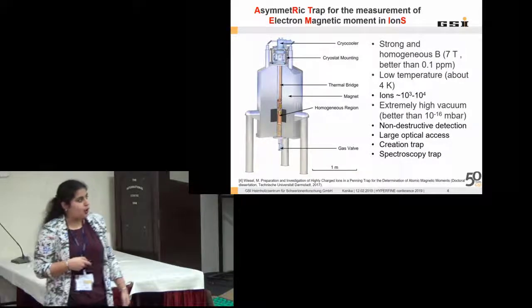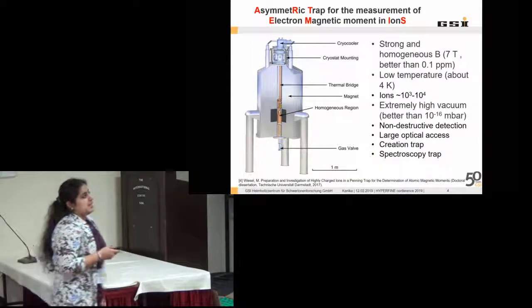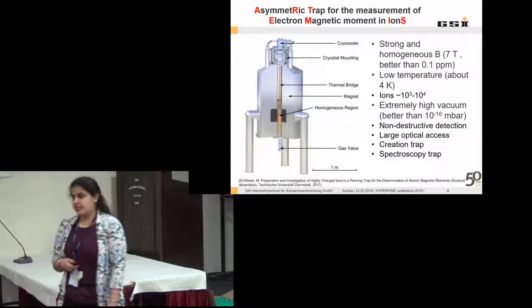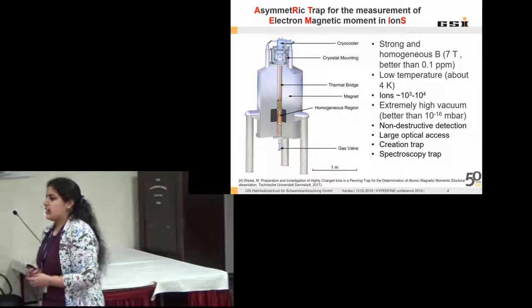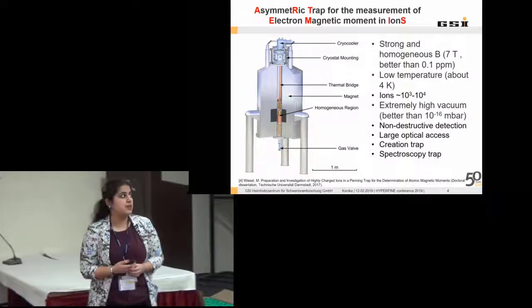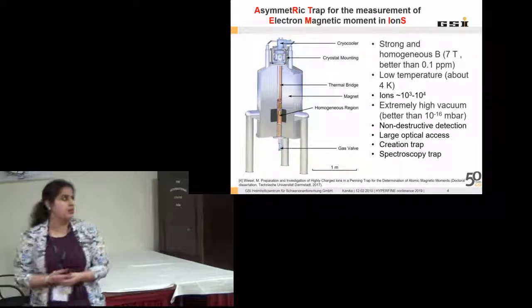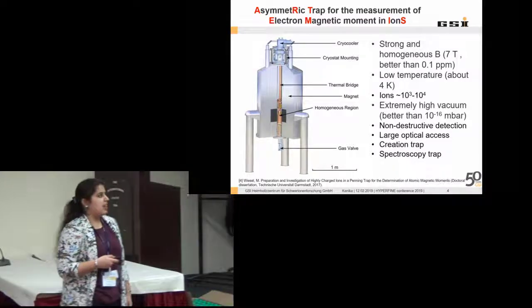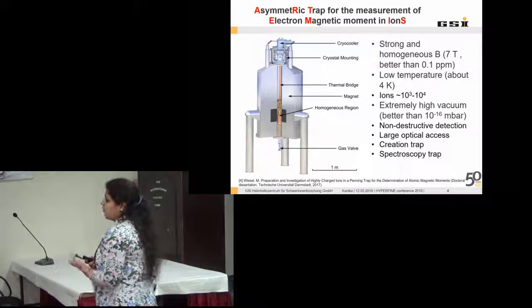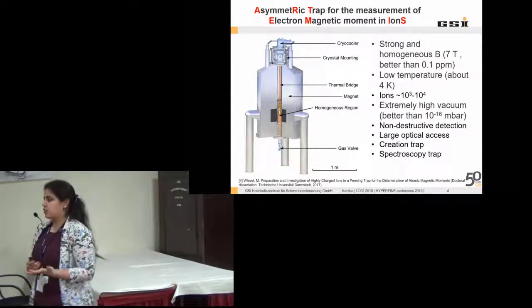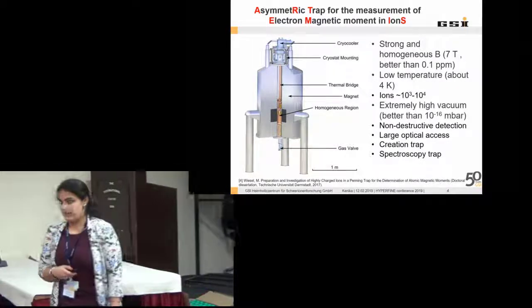Here we have a gas valve at present for the injection of the gas into the trap. We need a strong magnetic field and quite homogeneous. The magnetic field is of the order of 7 Tesla, which is by a superconducting magnet, and it's running in persistent mode since 2009. We supplied a current of 210 amperes. We have low temperatures and we are dealing with a cloud of ions of about 10 to the power 3 to 10 to the power 4 ions. We need large optical access, which I will discuss later.